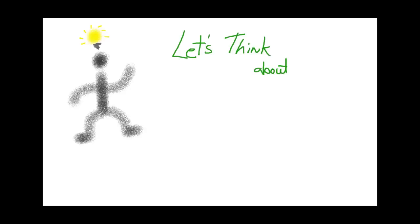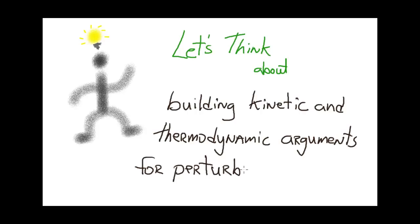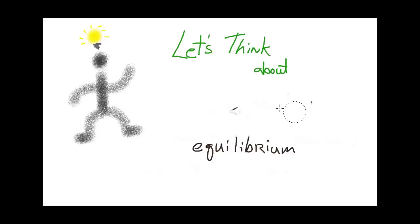After watching this video, you should have a fundamental understanding of how you can use the kinetic description of the equilibrium state and a thermodynamic description of that state to build explanations of how a system at equilibrium changes once perturbed. In other words, if something is added or removed from the reaction in the state of equilibrium.